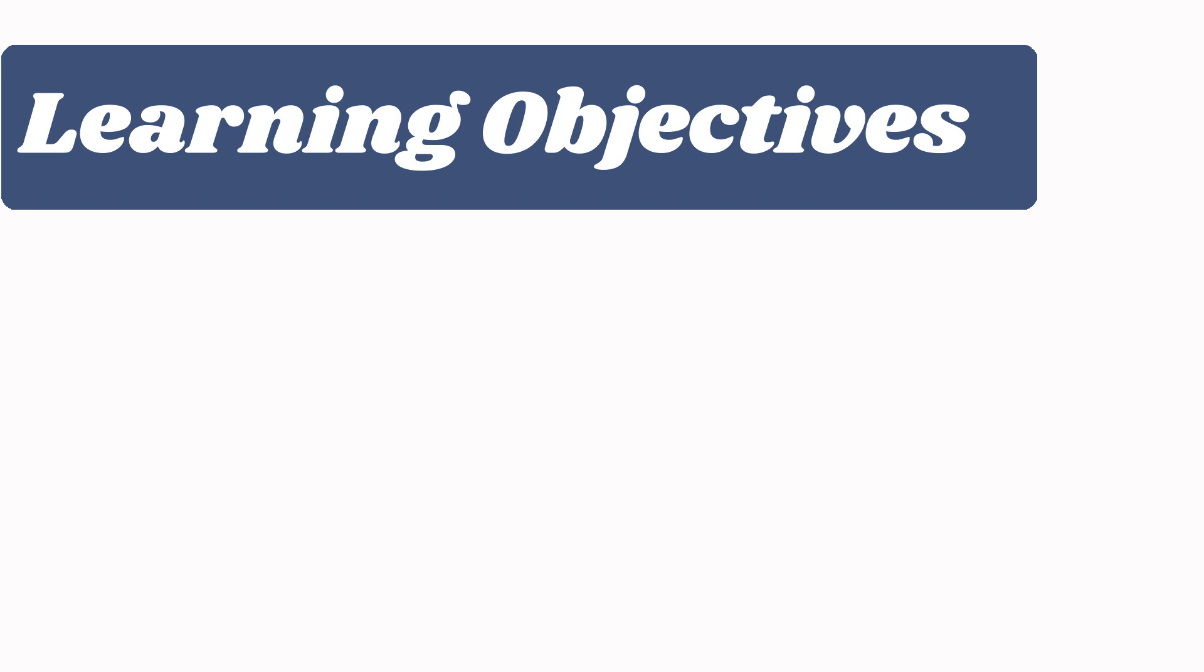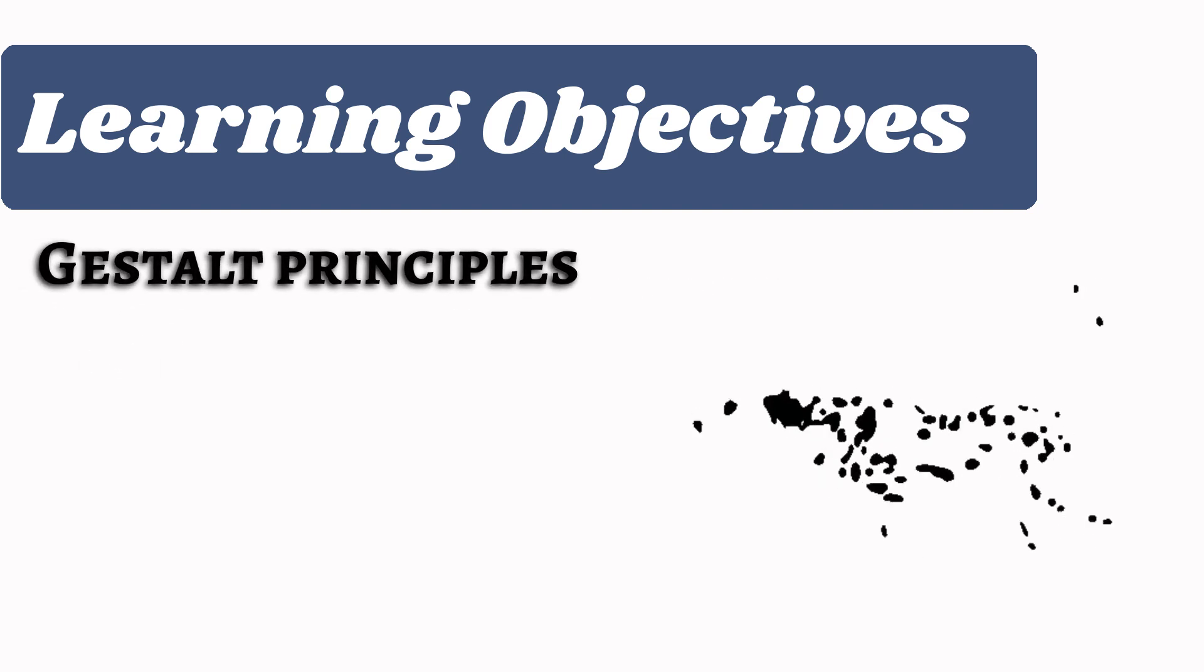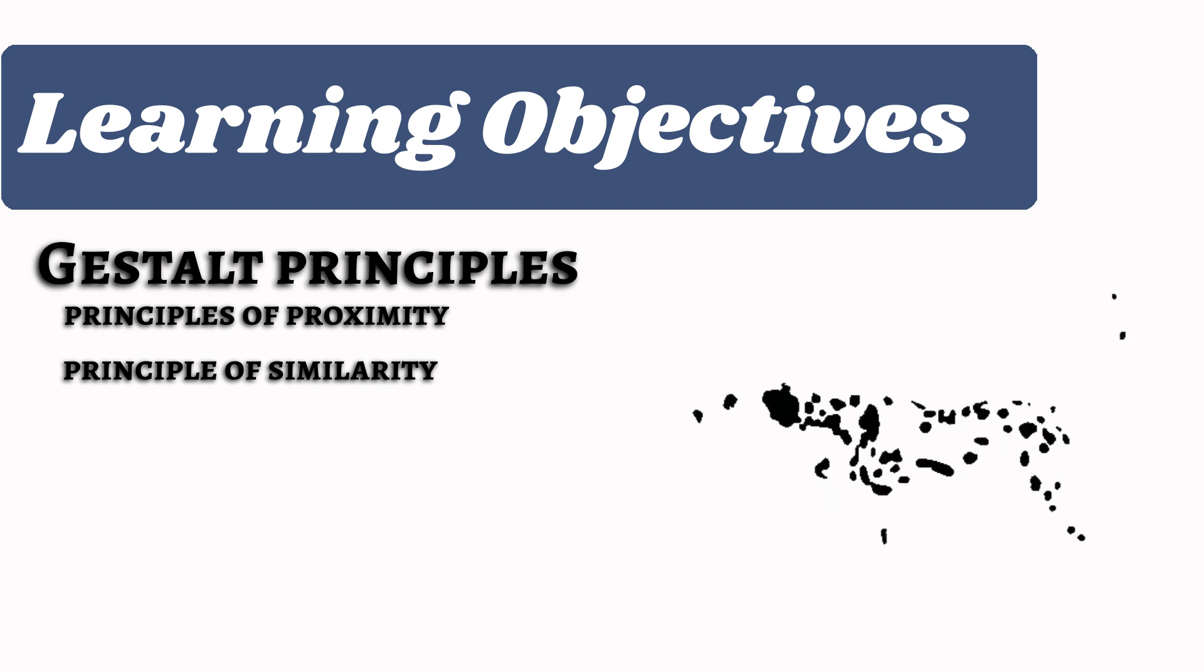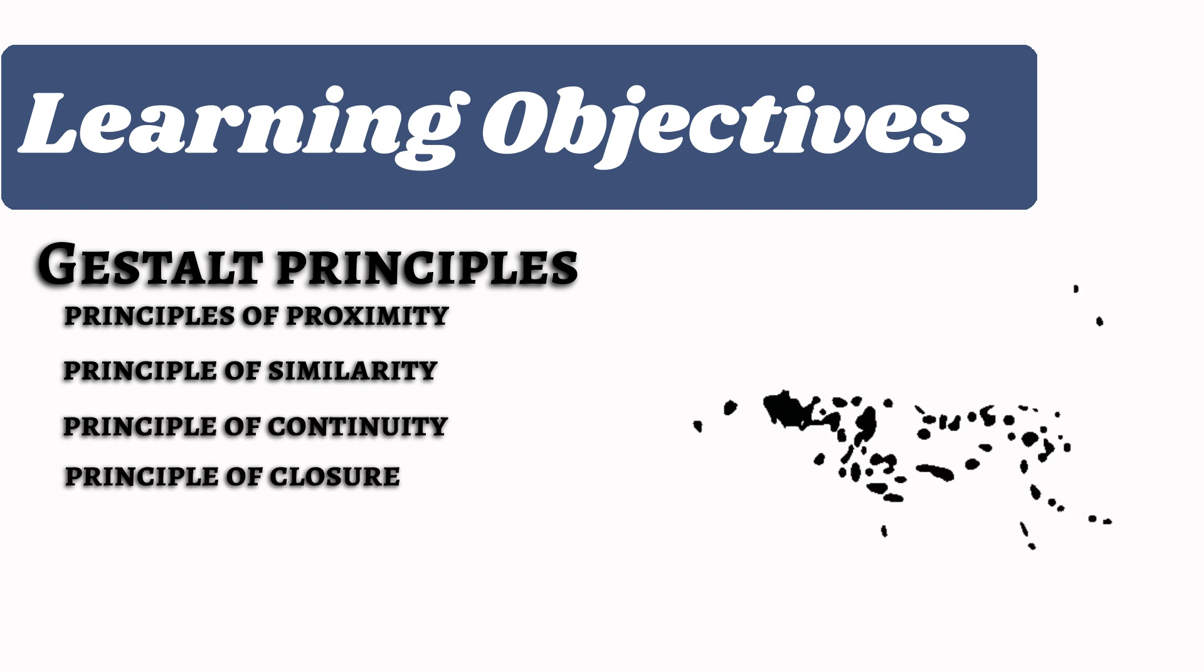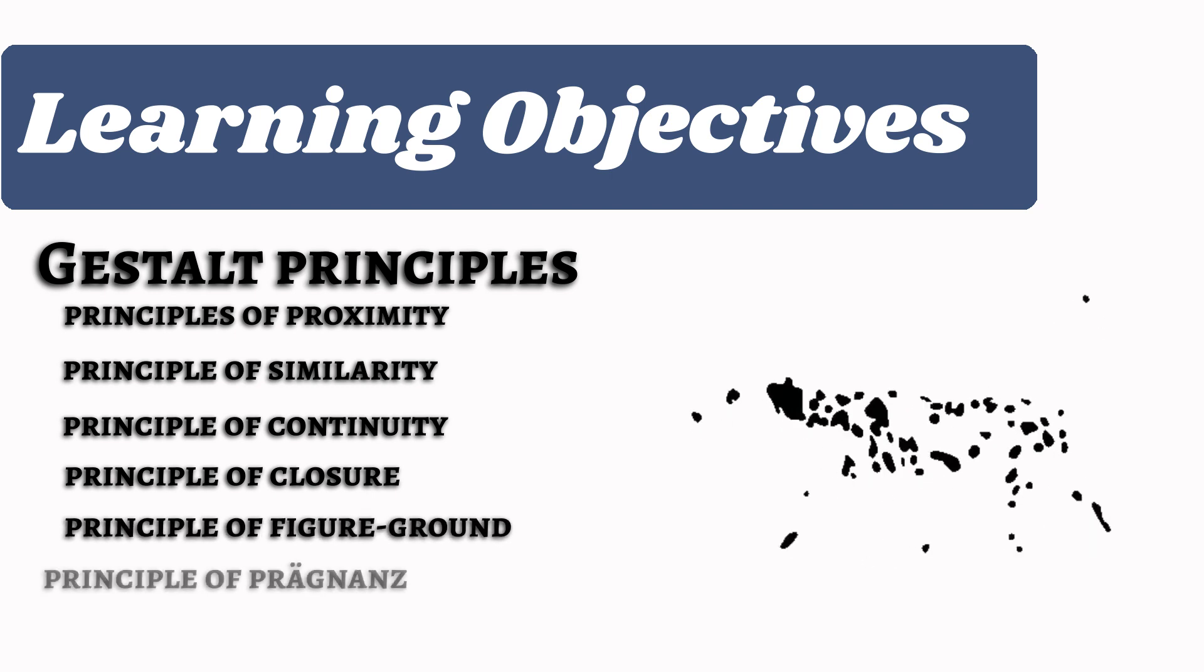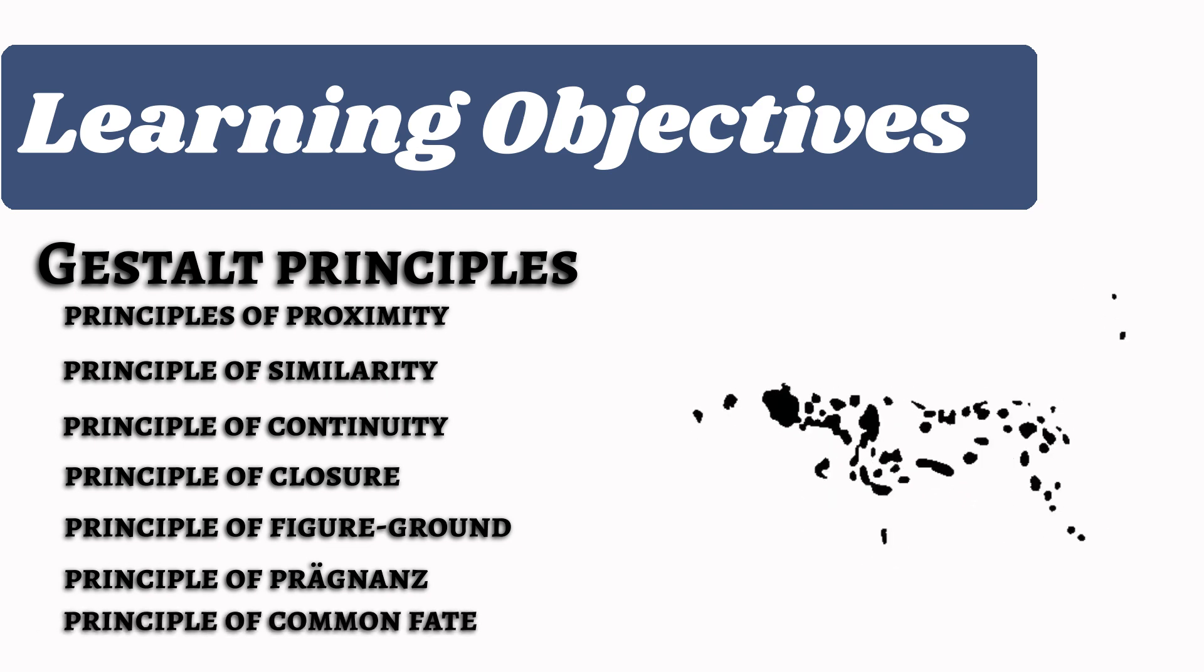We will now tie it all together and combine everything we've learned about shapes, colors, moods, and perspective and apply the fundamentals to Gestalt principles, which breaks down into principle of proximity, principle of similarity, principle of continuity, principle of closure, principle of figure ground, principle of pragnance, and last but not least, principle of common fate.